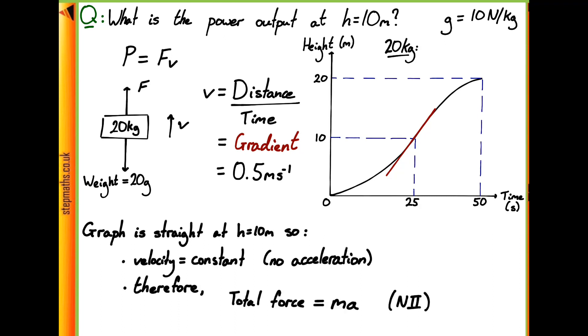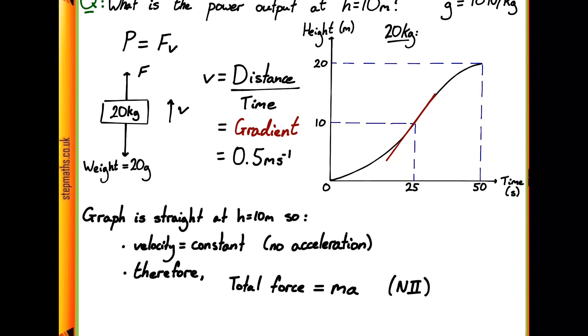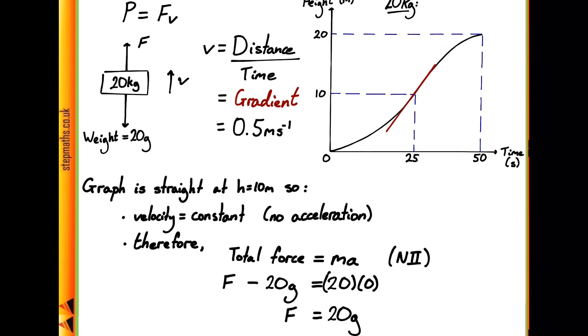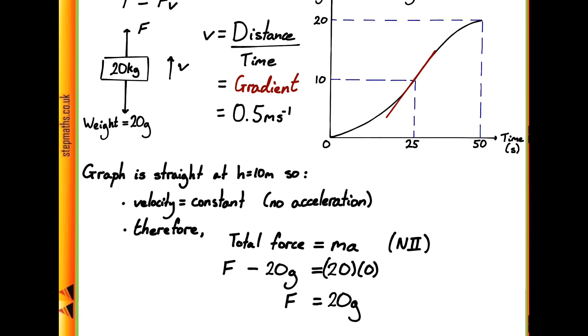By Newton's second law, we know that the total force equals mass multiplied by acceleration. The total force is F minus 20g, our weight. That equals 20 times the acceleration, which is zero. This gives us that the force pulling the mass up is just equal to the weight, 20g.